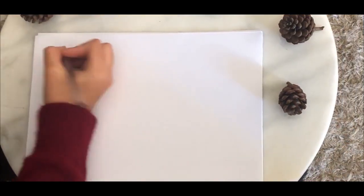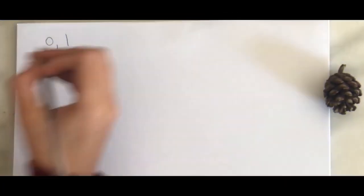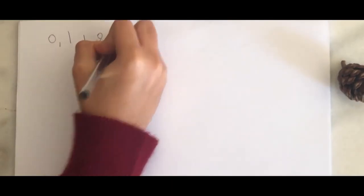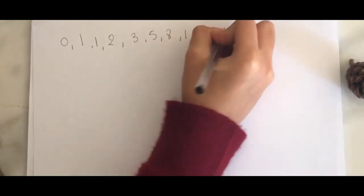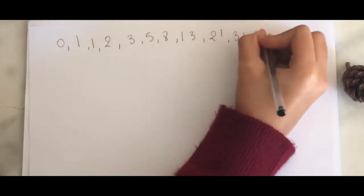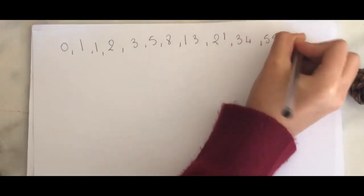So Fibonacci numbers are a sequence of numbers starting with 0 and 1. Each of the following numbers is the sum of the previous two. So we have 0 plus 1 is 1, 1 plus 1 is 2, 1 plus 2 is 3, then 5, and so the list continues.